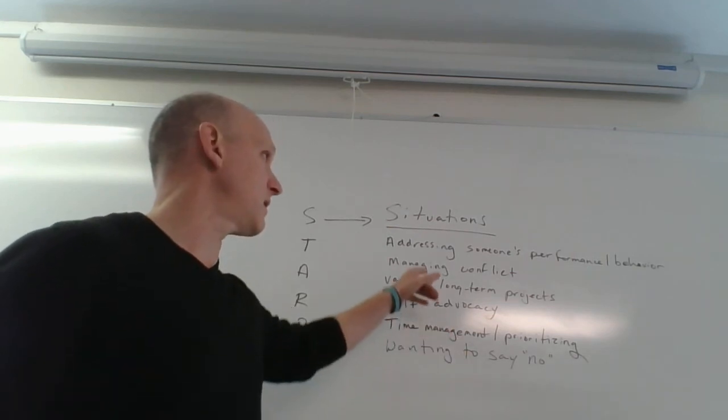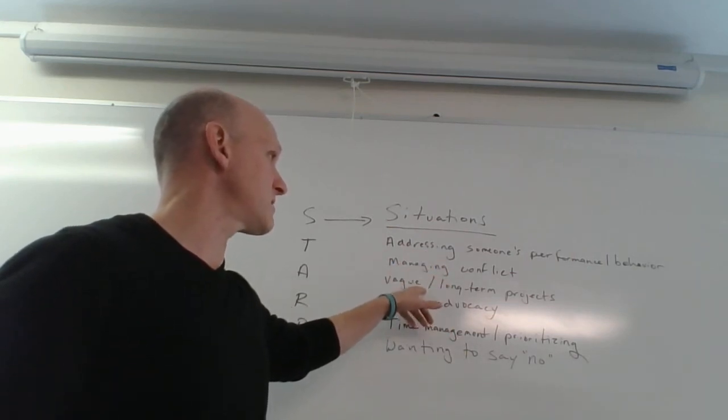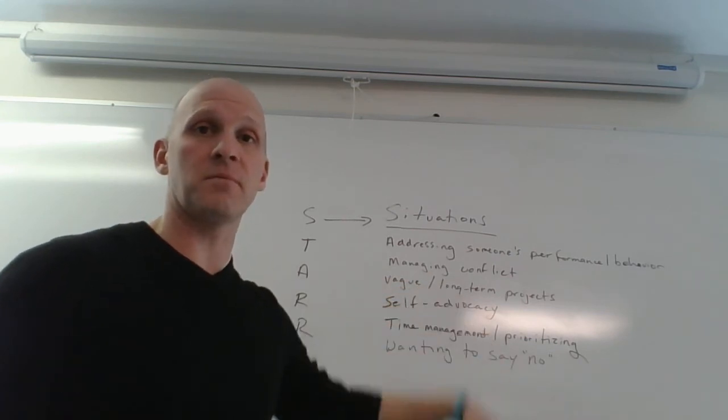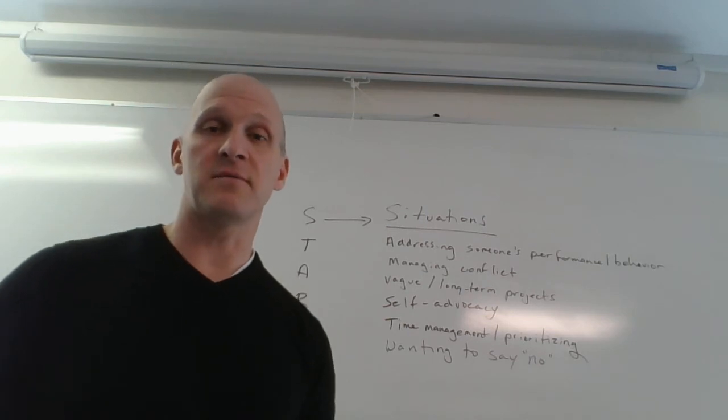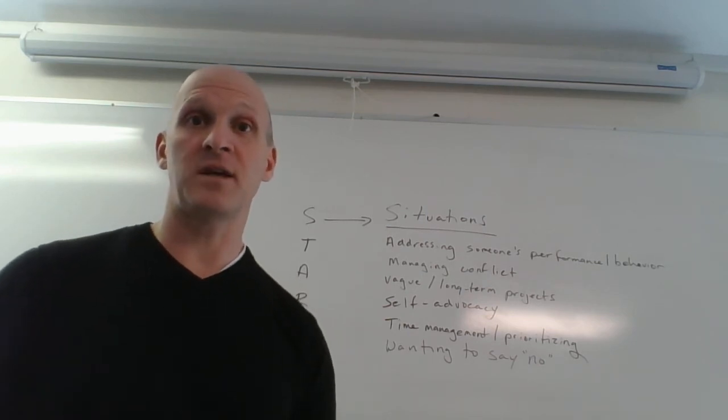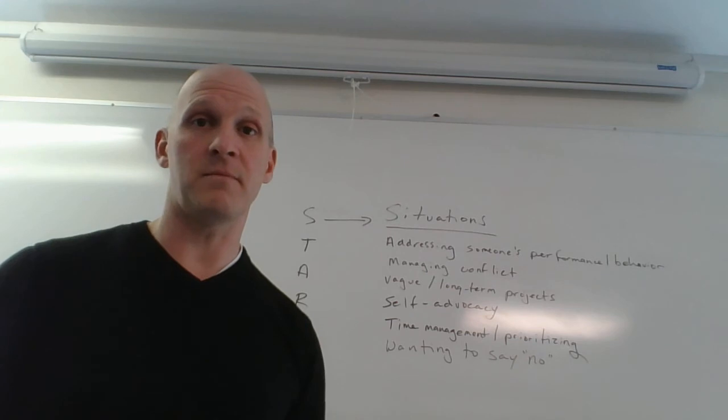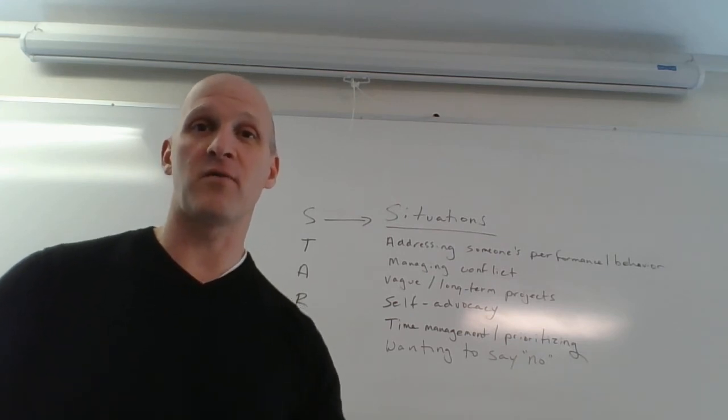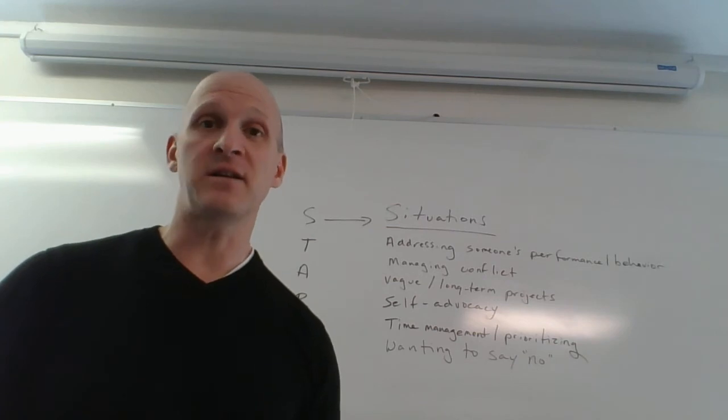Let's just take one of these. Let's look at vague long-term projects. If you find that you've got some things on your to-do list that keep recurring—and that's one way to spot it, by the way: to see your to-do list revised over and over again, and what you're procrastinating on.